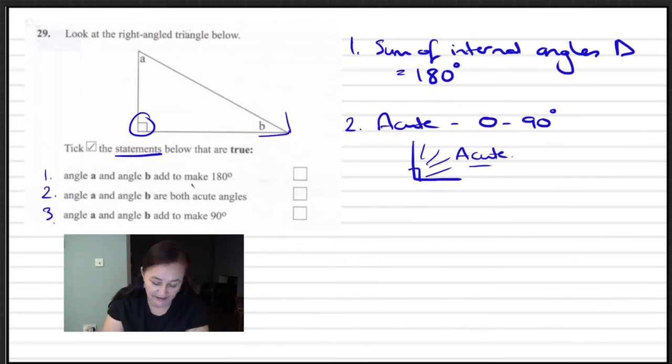So once you understand what acute means then this question is quite straightforward. For B we can see that B falls between the 0 and the 90, and if we put a square onto the A we can see that that is also the case. So we can say that that one is correct.